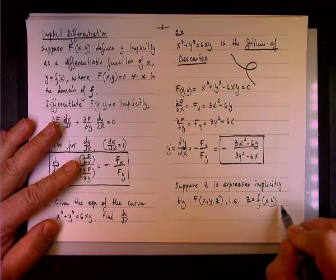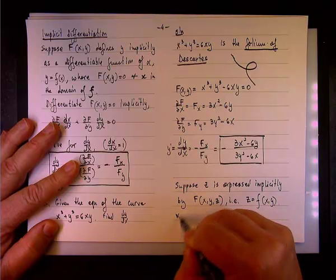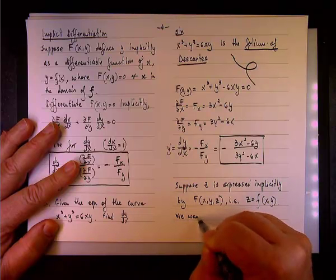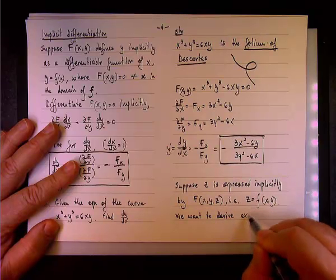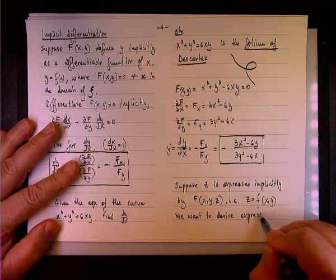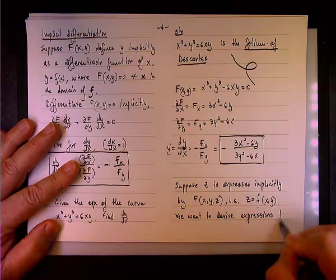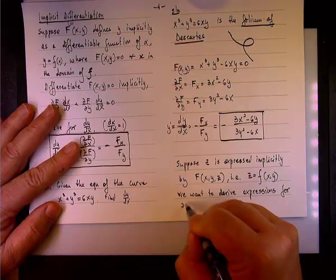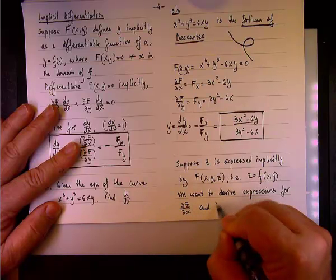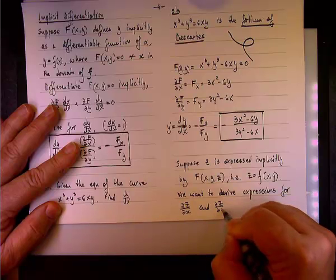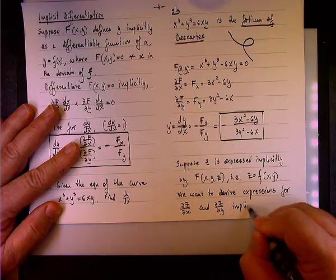We want to derive expressions for ∂z/∂x and ∂z/∂y implicitly. And we'll do it on the next page.